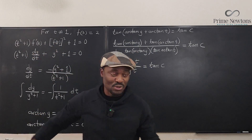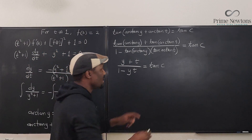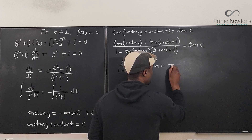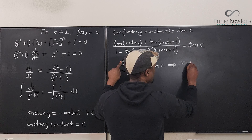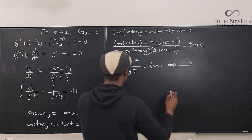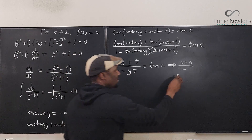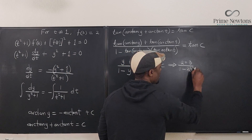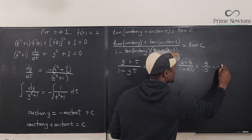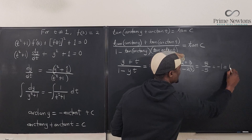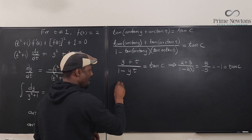Using the initial conditions — when t = 3, y = 2 — we substitute: (2 + 3) / (1 − 2·3) = 5 / (1 − 6) = 5 / −5 = −1. Therefore tan(C) = −1.